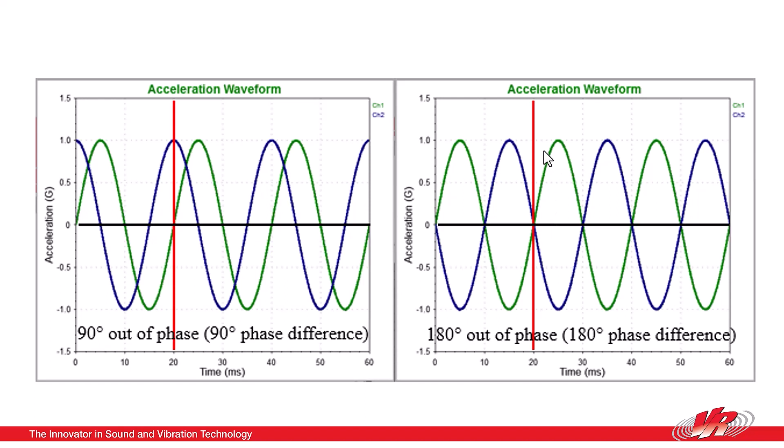If the green and the blue line overlaid on exactly the same cycle, where the green and the blue would be at the same position here, we would say they are in phase.